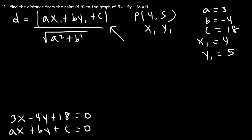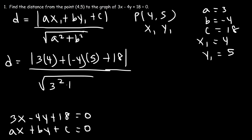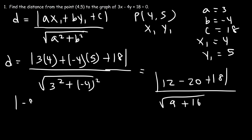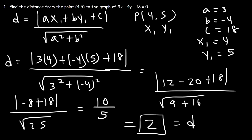So let's go ahead and plug this information into that formula. So d is going to be — a is 3, x1 is 4, b is negative 4, y1 is 5, and c is 18. Now, 3 times 4 is 12. Negative 4 times 5 is negative 20. 3 squared is 9, negative 4 squared is 16. 12 minus 20 is negative 8, and 9 plus 16 is 25. Negative 8 plus 18 is 10, and the square root of 25 is 5. So 10 divided by 5 is 2. That's the distance between the point and the line.